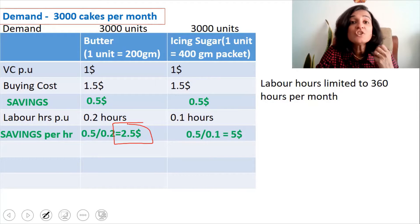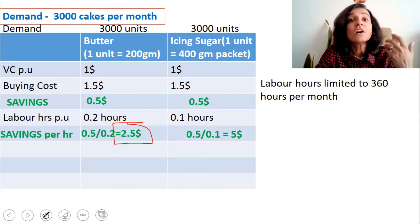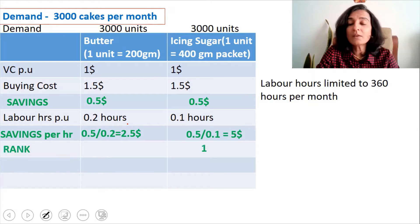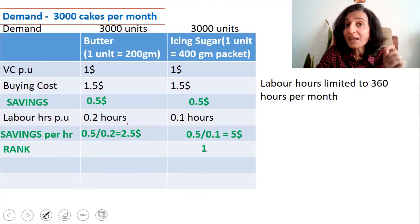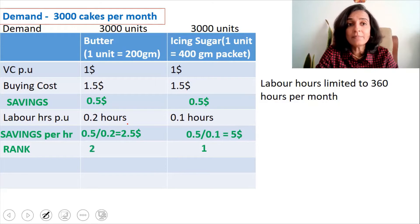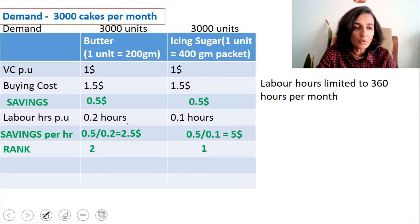This means we should make icing sugar first. So the ranking is: first rank is for icing sugar — make icing sugar first — and if we have balance time, we will make butter, so second ranking is for butter.